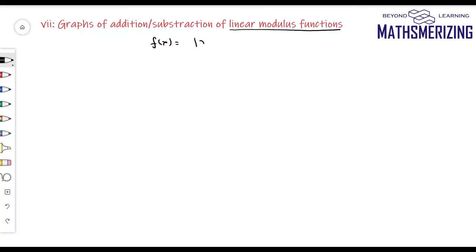Let's look at another example where f(x) = |x-1| - |x| + |x+1| for x ∈ ℝ. The general way of solving this would be to take different intervals: x < -1, -1 ≤ x ≤ 0, 0 ≤ x ≤ 1, and x > 1, then write the definition of each modulus function separately and combine them. But there is a direct method with which we can draw this graph.